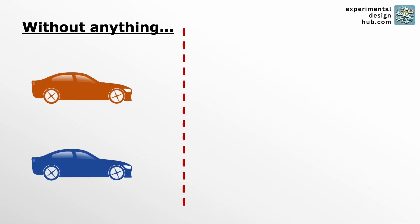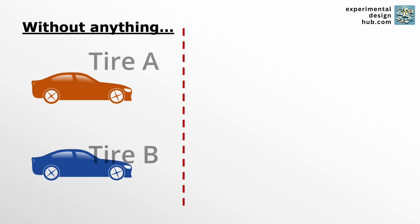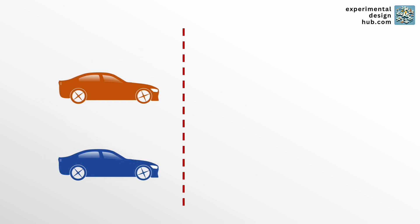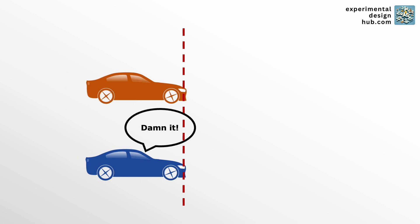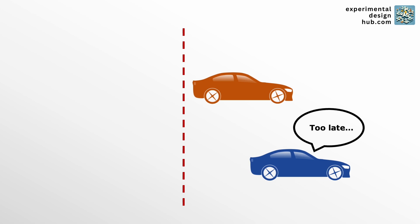The simplest way she could approach this is by just doing two tests — one with tire A, which is a competitor's tire, and one with tire B, which is the new formula. Pretty easy, right? But here's the thing: this method isn't very reliable. Why? Because things like the driver's reaction time could vary between tests. If the driver takes a little longer to hit the brakes during the test with tire B, it might look like the tire isn't performing as well, even if it's actually better.